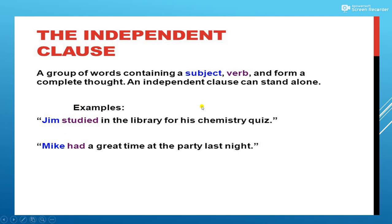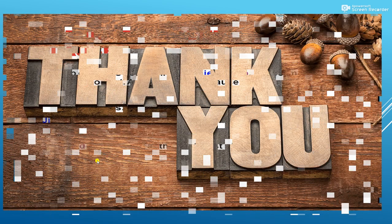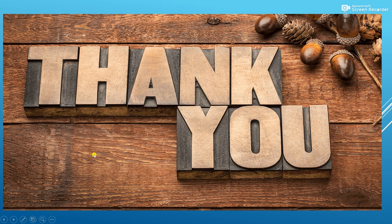See the examples. 'Jim studied in the library' — Jim studied in the library, it has a subject and verb and gives complete meaning. So it is an independent clause. 'Mike had a great time at the party last night' — in this sentence there is a subject, Mike, and a verb, had, so it gives a complete meaning.